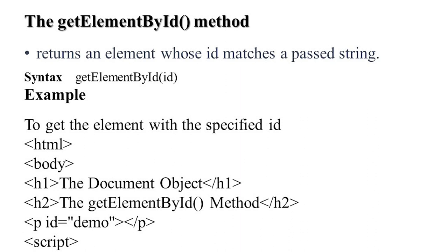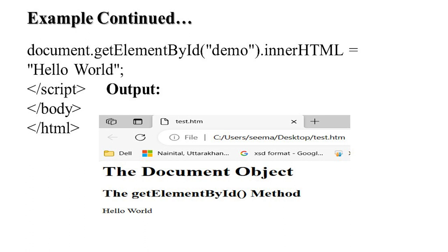For example, we want to find the element with a specified ID. There are two headings, H1 and H2, and we have assigned the ID 'demo' to the paragraph element. In the script tag, we write: document.getElementById('demo').innerHTML = 'Hello World'. The output shows the two headings, and since the passed string matches the ID 'demo', 'Hello World' will be the output for that paragraph.